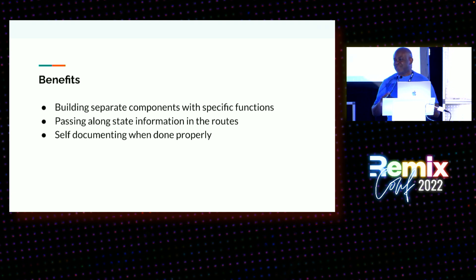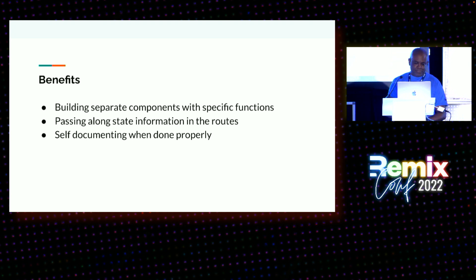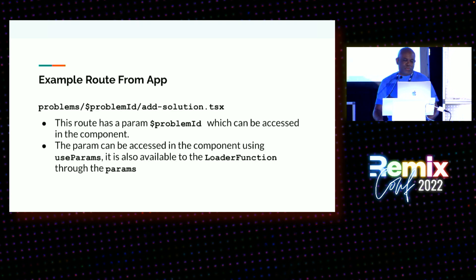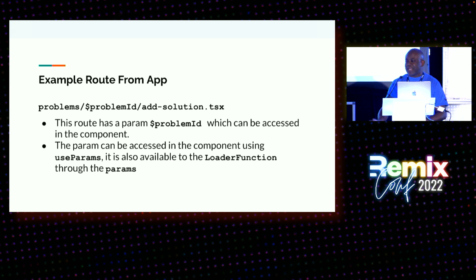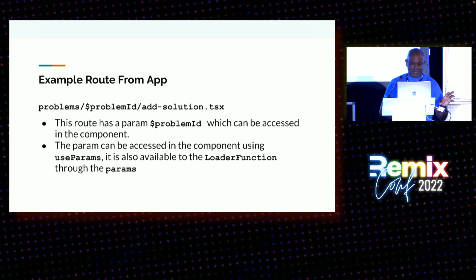Even when I wrote this sample, I had to change the name of some of my files and routes so that when I just looked at the URL, I could understand clearly what was going on. This is an example route for my app: I'm in a problem folder, that thing with the dollar sign is a parameter, and this URL takes me to a form where I can add a solution. The problem ID is the ID associated with the problem that the solution will be linked to. The parameter — the problem ID — can be accessed in a component using useParam, and can also be accessed in a loader function via params.